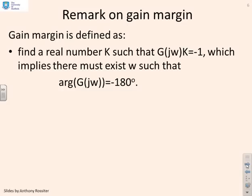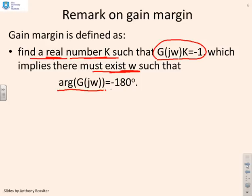Now to put a bit more precision on the gain margin for problem solving: we find a real number K such that G(jω) times K equals minus 1. We're finding a K so that the Nyquist diagram goes through minus 1. To solve this, there must exist a frequency ω such that the argument of G(jω) is minus 180 degrees, because K is a positive real number so the negative sign must come from G(jω).